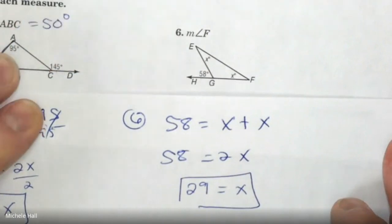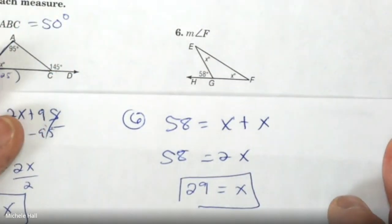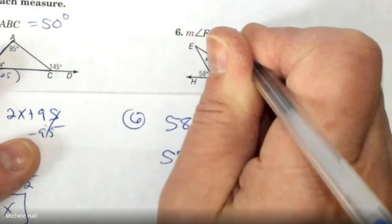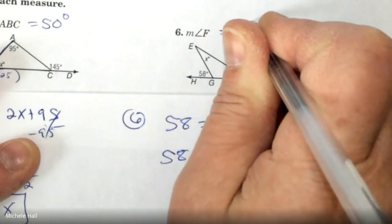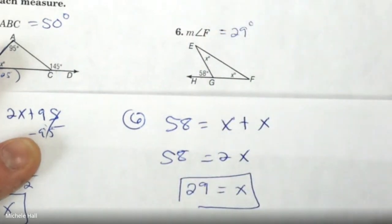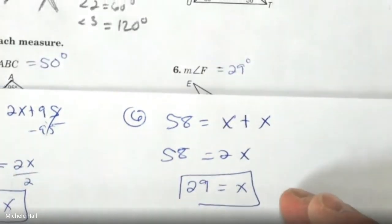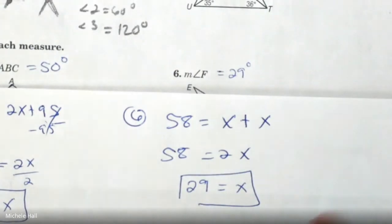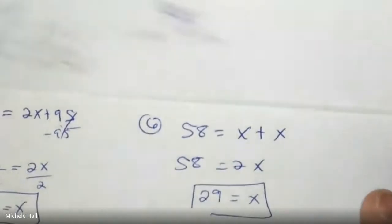Did I answer the question? How much is angle F? Angle F equals 29 degrees because it's just X. Okay, let's get some homework — 4.2 homework: problems 10, 2, and 1.